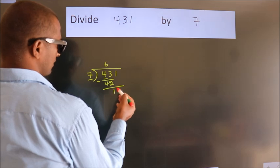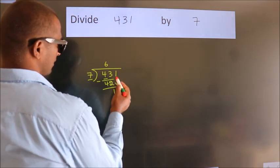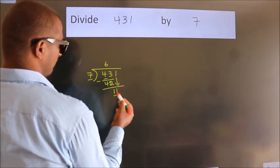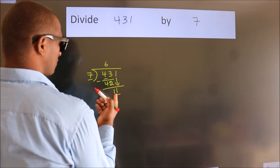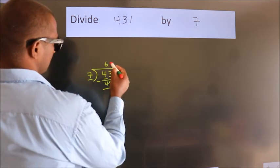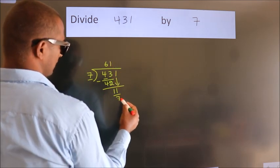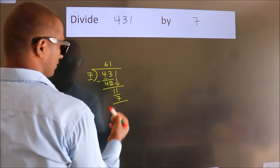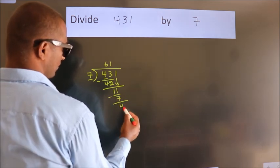After this, bring down the beside number. So, 1 down. So, 11. A number close to 11 in the 7 table is 7 times 1, which is 7. Now we subtract. We get 4.